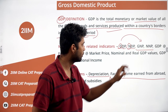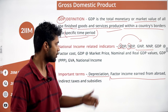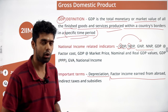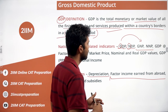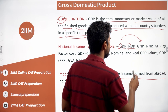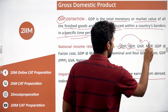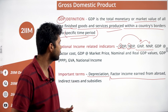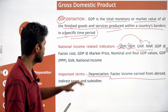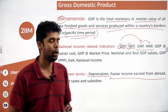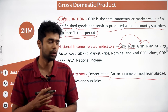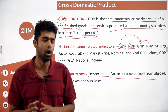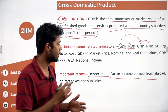So the basic relationship is: GDP minus depreciation equals NDP; GDP plus net factor income from abroad equals GNP; GNP minus depreciation equals NNP. Depreciation is an accounting concept that captures how money is lost through natural wear and tear of capital goods. All these measures are attempts to find a single number to understand economic activity and then improve upon it.